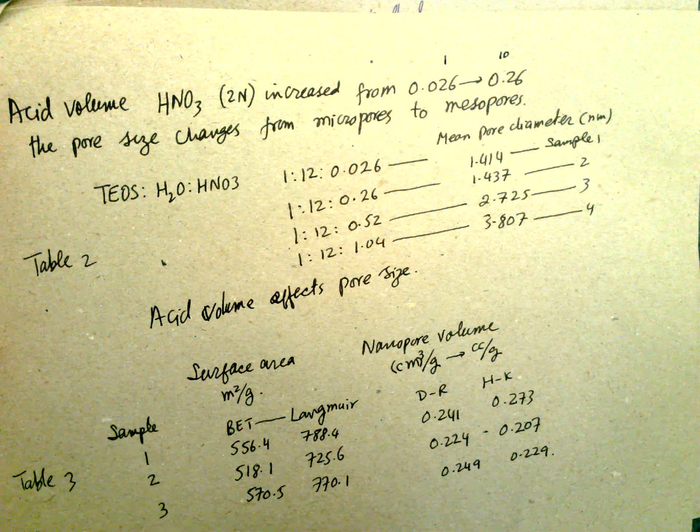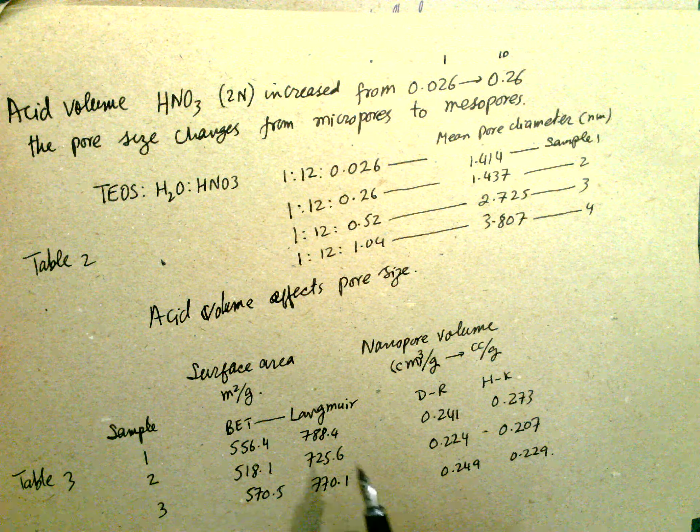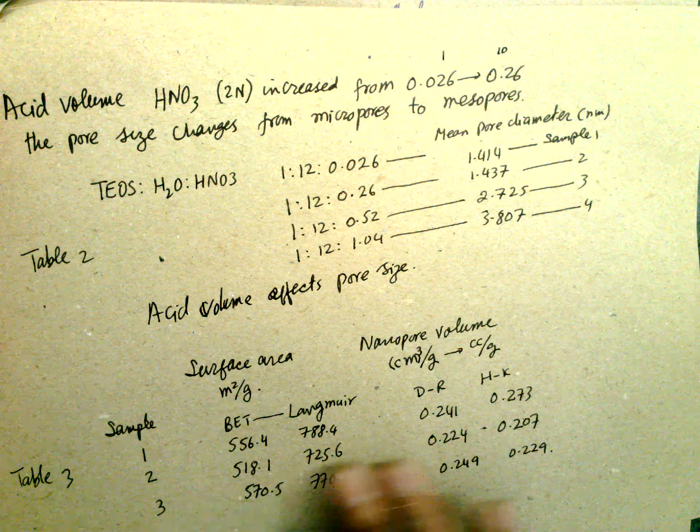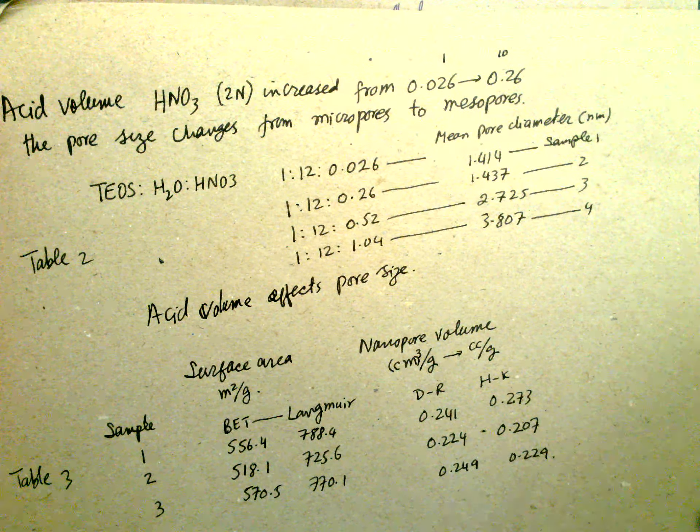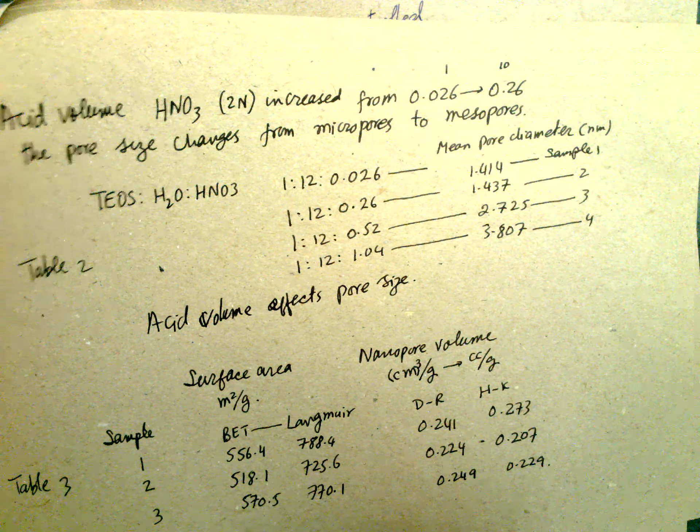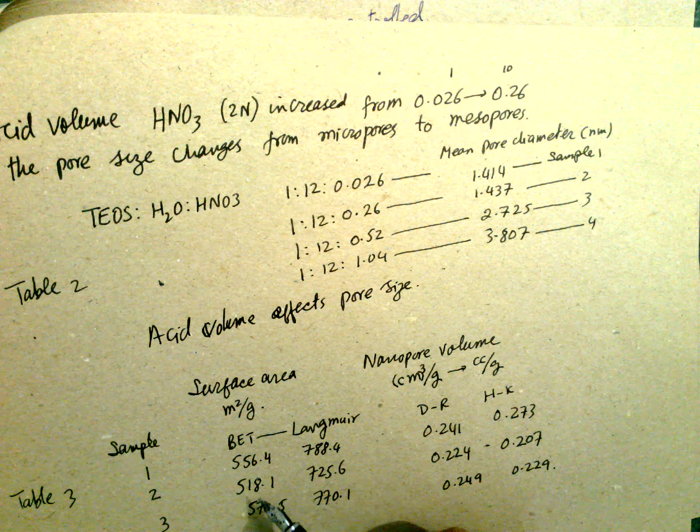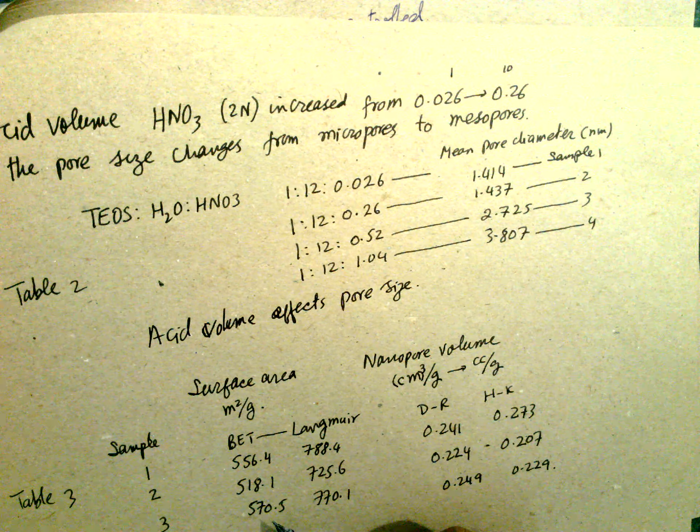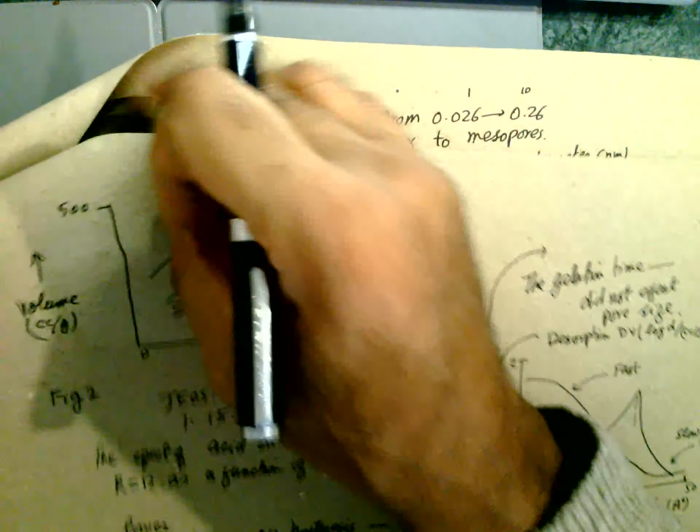Acid volume affects the pore size. Surface area is also sample 1, 2, 3. This is the increase. This is the numbers. This is lower, and this is lower. This is lower, and this is higher, and this is very high.